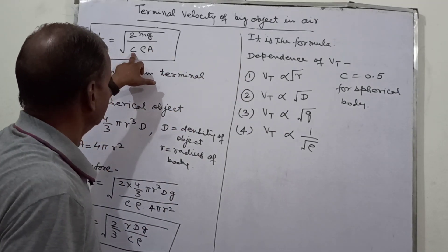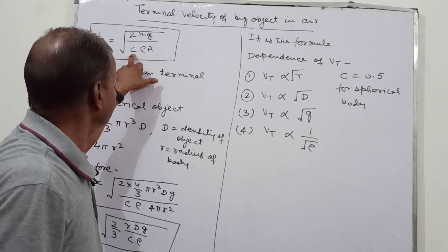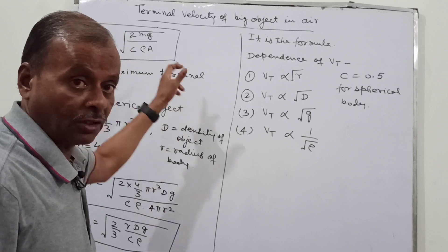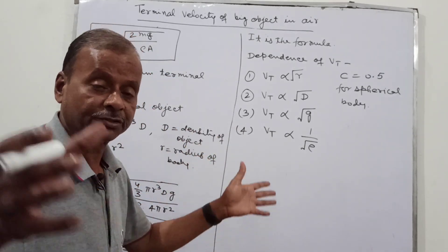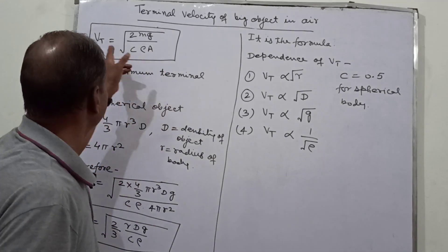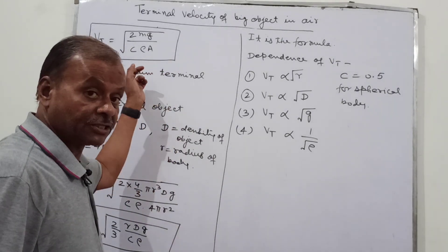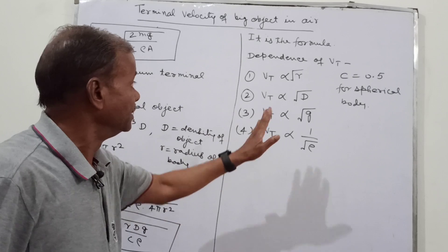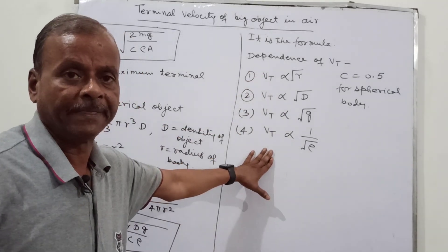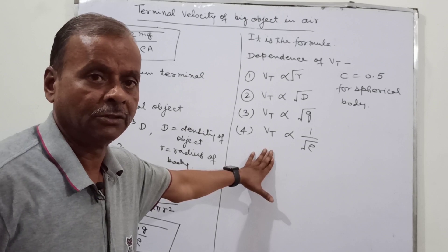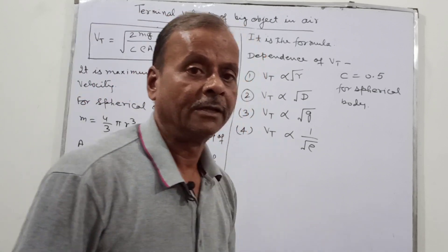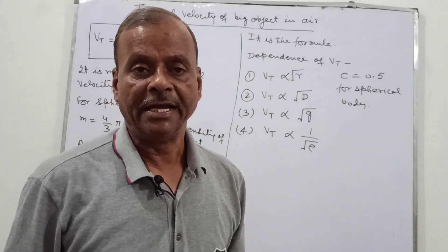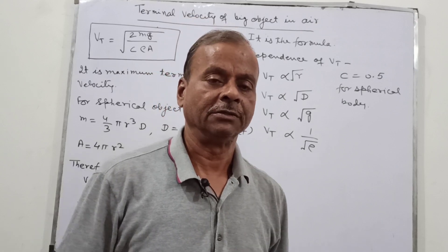The drag coefficient C, the density of the air rho, and the cross-sectional area A also affect terminal velocity. A larger body has a larger cross-sectional area, which reduces the terminal velocity. This expression for terminal velocity applies to bodies that are very large in size and fall vertically downward in the air. Thank you very much.